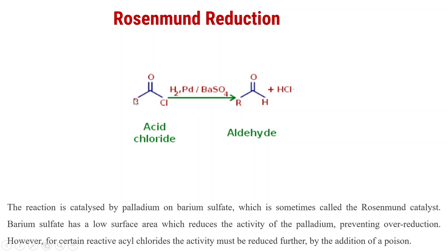The R group may be alkyl, and we can also take the aromatic ring, meaning Ar. The reaction is the same because R does not change here. If we take alkyl here, we get alkyl in the product as well. If we take an aryl group — meaning an aromatic ring — we also get the aromatic ring in the final product, because at this stage and position there is no reaction. The main point of the reaction is here.